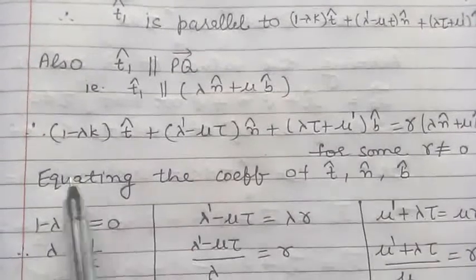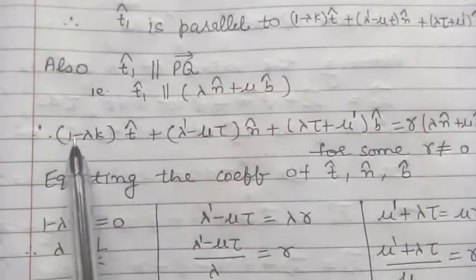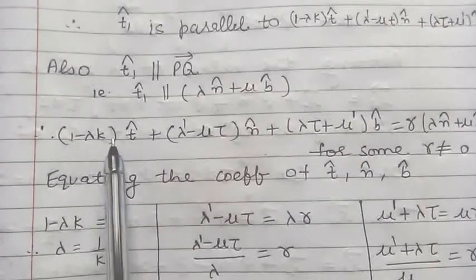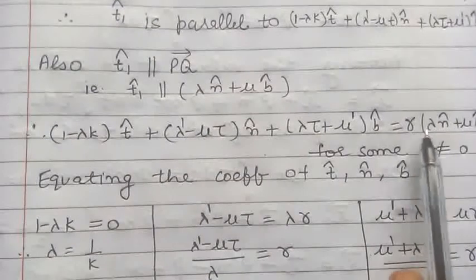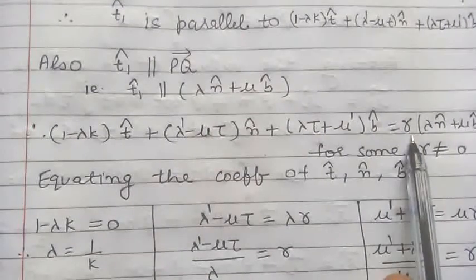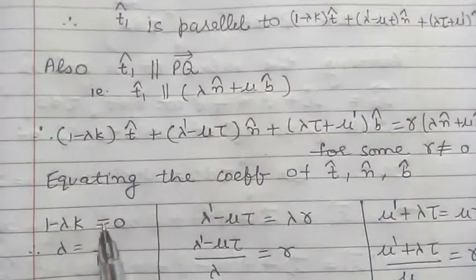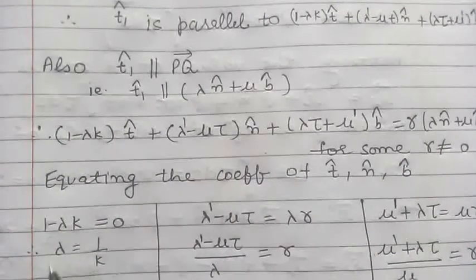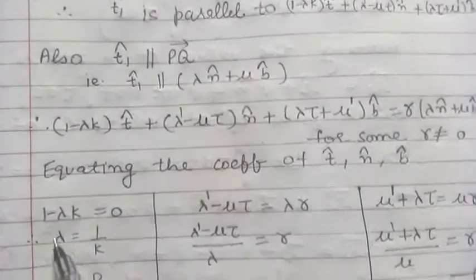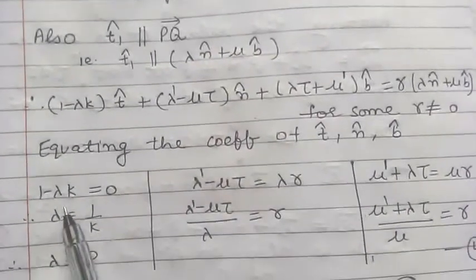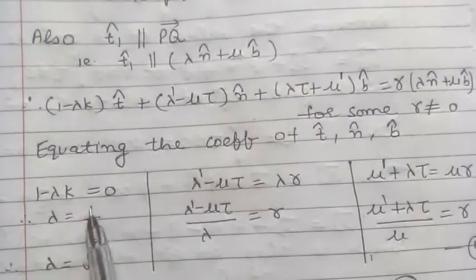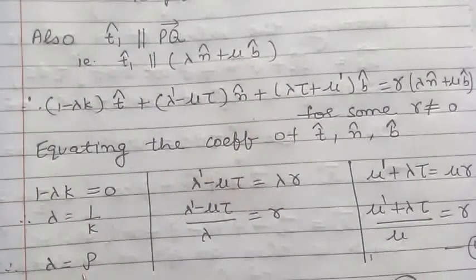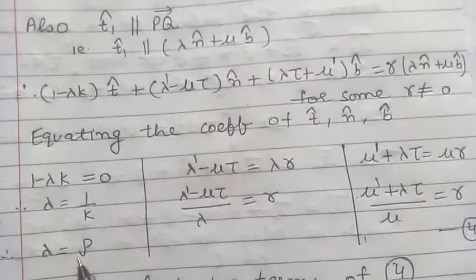The coefficient of T cap on the left side is 1 minus λk, and on the right side the coefficient of T cap is 0. So 1 minus λk equals 0, which gives us λ equal to 1/k. Also, 1/k is the radius of curvature, which we denote by ρ. So λ equals ρ.